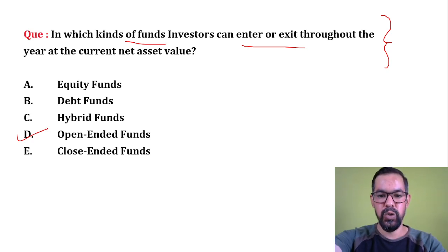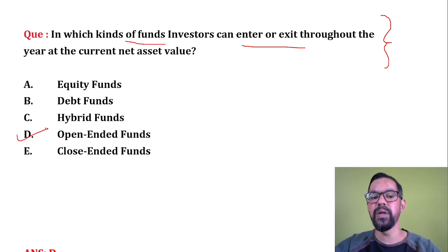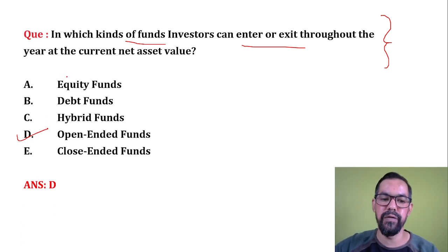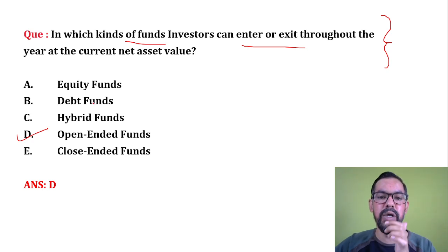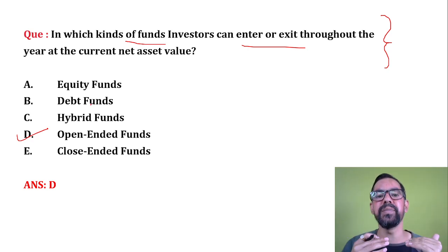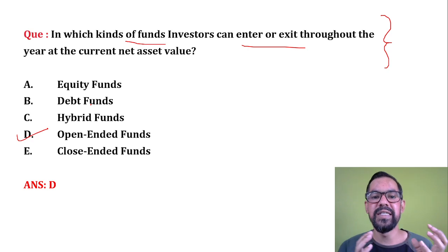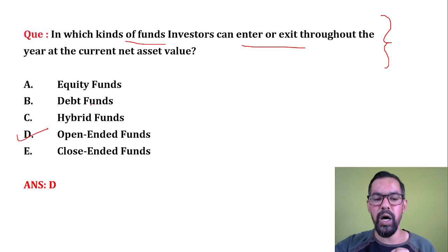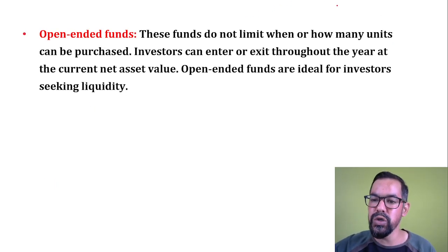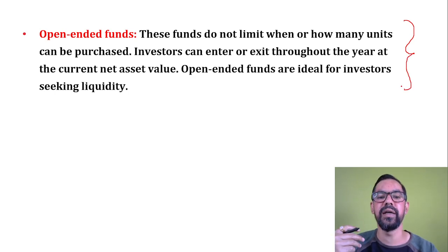We have two major categories. Open-ended is where investors can enter into any mutual fund at any specific time. In case of close-ended, we have a fixed lock-in period. Equity funds are where the fund manager invests the entire money in equities and shares. Debt funds invest the entire portfolio in debt securities. Hybrid is a combination of equity and debt — in the Indian market we use 60:40, 50:50, or 70:30 ratios, depending on the risk of the portfolio.